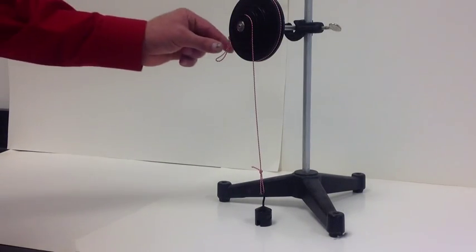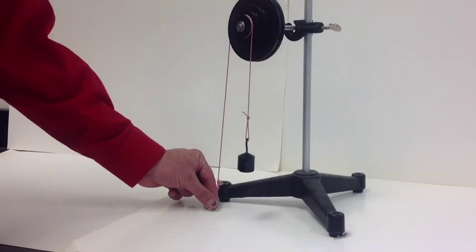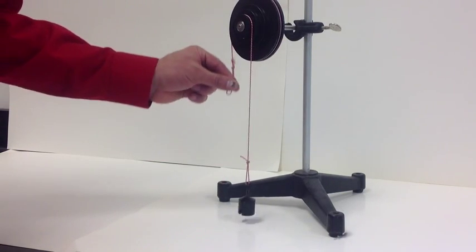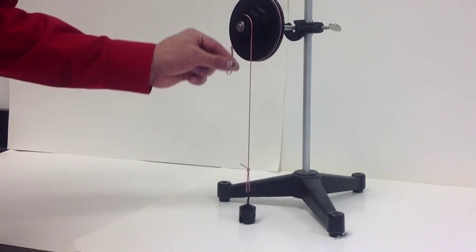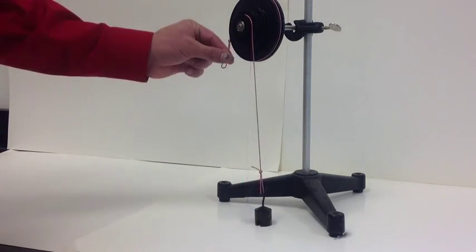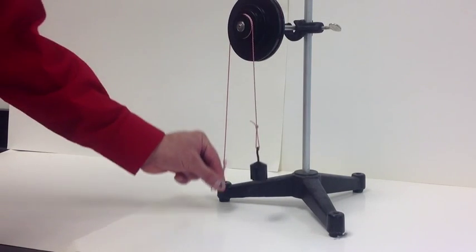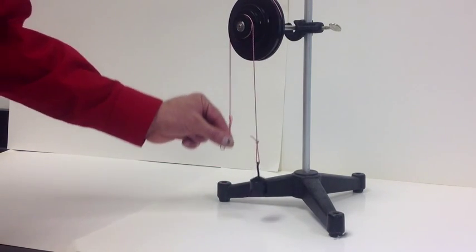This wheel and axle is a force multiplier and the mechanical advantage is greater than one. It requires a small force to lift a large weight. You can also see that it is a speed distance divider because you have to pull for a much larger distance than that weight rises.